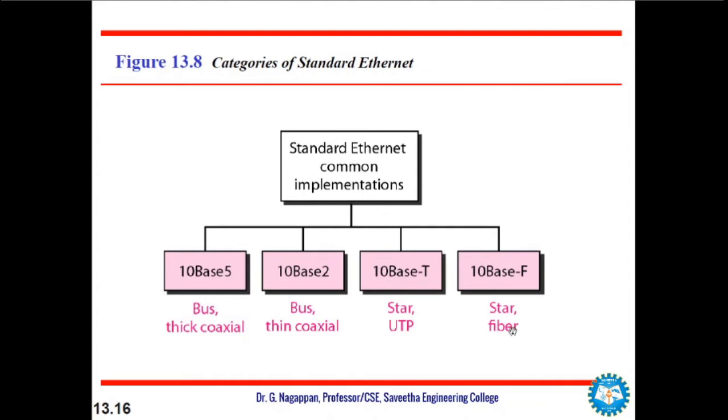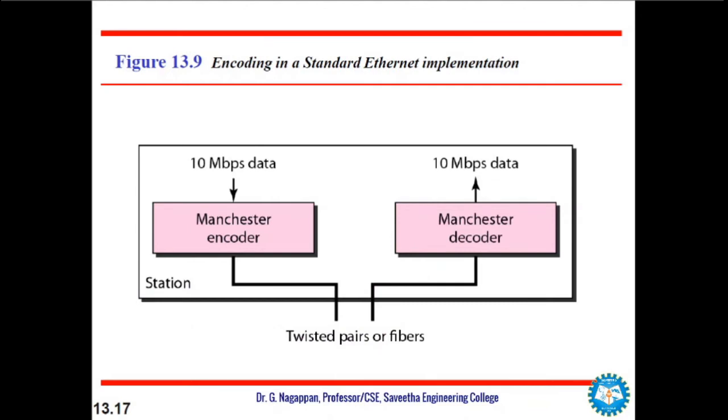But they all have something in common, and that is the encoding technique, which is Manchester encoding. All standard implementations use digital signaling with baseband at 10 Mbps. At the sender side, the data are converted into digital signal with the help of Manchester encoding. At the receiver side, the receiving signal is interpreted as Manchester and decoded into data. Manchester encoding is self-synchronous, providing a transition at each bit interval. So this is how, whatever the medium, the encoding happens in Ethernet.